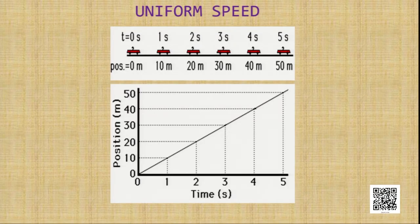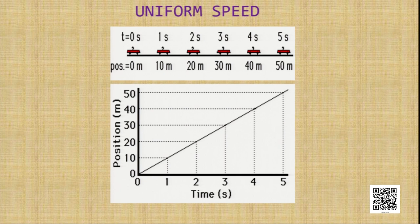The first graph we will draw is for uniform motion, when the change in distance is equal for a given interval of time. On the x-axis we take time, and on the y-axis we take position — distance in meters and time in seconds. When time is 0, the distance travelled is 0. Up to one second, the distance travelled is 10 meter. So on the graph we plot the point (1, 10) — time is 1, distance is 10 meter.